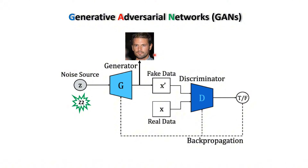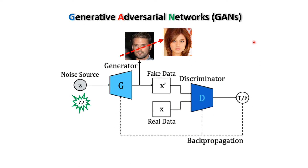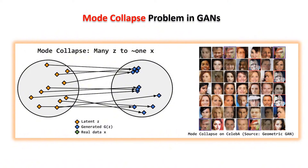But unfortunately, in practice, this may not happen and you can get an image very similar to the first image. This problem is known as mode collapse, meaning that you don't have diversity in the generated output images. In fact, this problem can be considered as a many-to-one mapping rather than a many-to-many mapping.